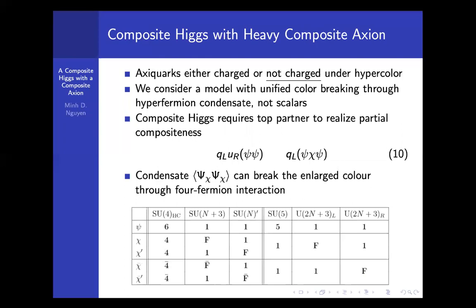There have been many attempts before to have composite axions in a composite model. Typically, the hyperfermion is also charged under the PQ symmetry. But in this case, we're going to consider a minimal model. We're going to attempt to break the unified color just through some hyperfermion condensate, and we're going to consider the case where the axi-quarks are totally separated since they don't have any hypercolor charges.